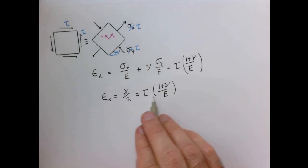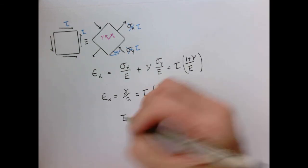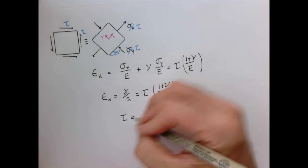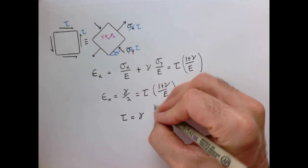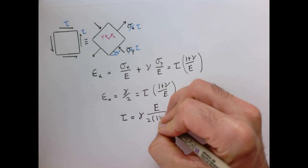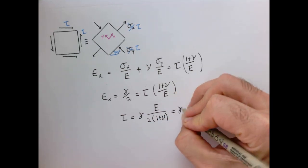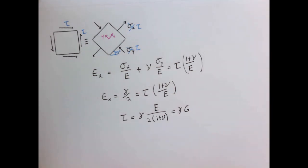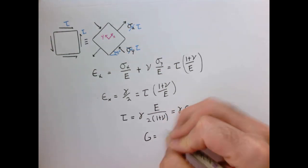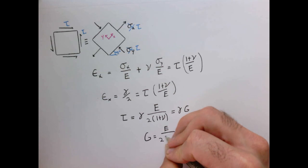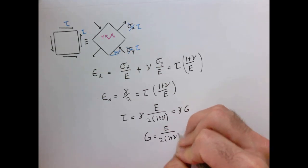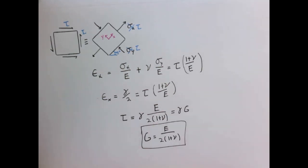Now if I rearrange this relationship to get it in a more familiar looking form, I could say that the shear stress is related to the shear angle times this funny factor, which before we called this combination of parameters the shear modulus. So what we've done through here is we've shown that the shear modulus is related to the elastic modulus and Poisson's ratio, a result that I just told you before but now we've demonstrated has to be true.